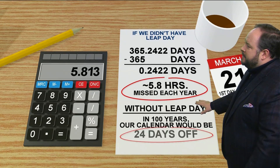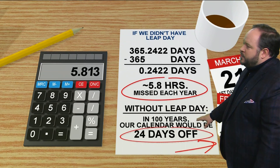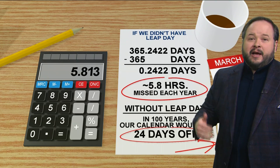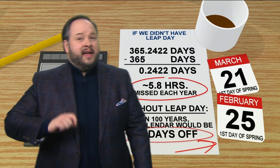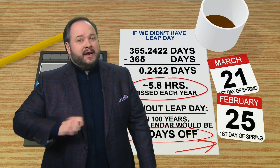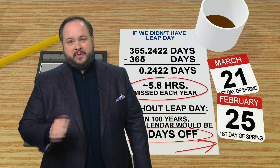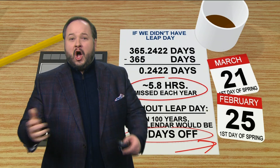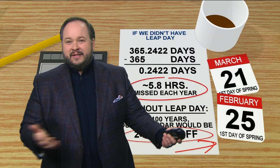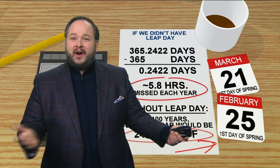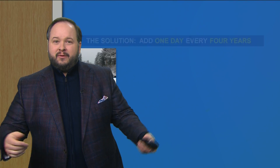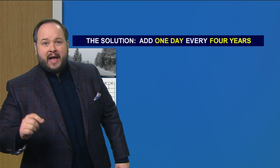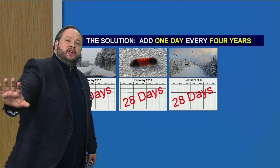So without a leap day, within 100 years the calendar would be off by 24 days, which means the seasons would be thrown off every century by that 24 days. So spring would start at the end of February, which some people wouldn't mind, but it would be tough to keep track of.